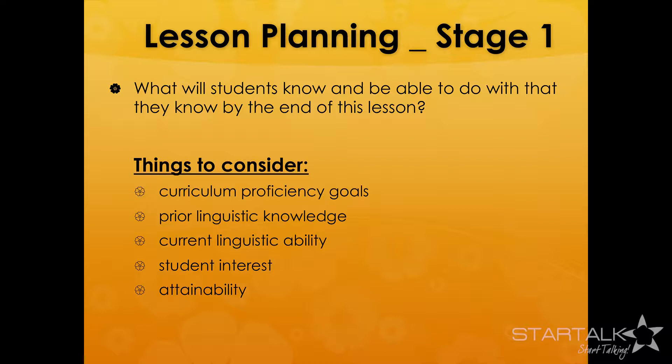Stage one is: what will students know and be able to do by the end of the lesson? This is the goal. But when we set the goals, there are a few things to consider: how does it align to our curriculum goal and proficiency goal; what students have learned previously, including their prior linguistic knowledge from just the last lesson; their current linguistic ability; whether students are interested in the things you are doing in class; and whether the goals you have set are realistic.